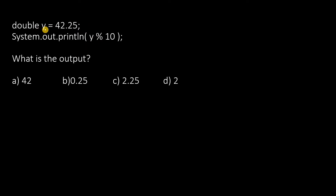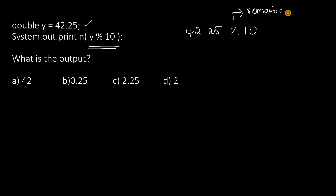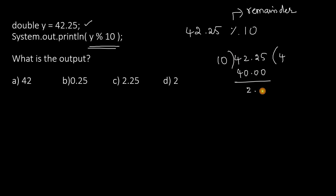Next: double Y = 42.25. What is the value of Y % 10? That means 42.25 modulus 10. The modulus operator gives the remainder. Divide 42.25 by 10, which gives 4 times 40, and the remainder is 2.25. So the answer is 2.25. Remember, in C language you cannot apply the modulus operator on floating point values, but in Java it is valid.